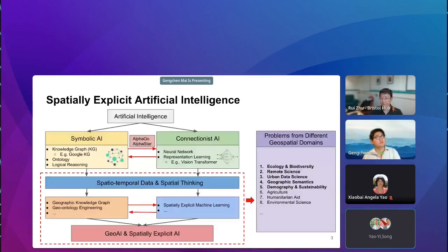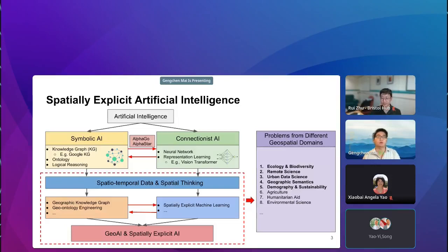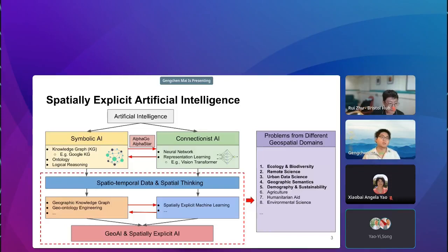Generally speaking, artificial intelligence has two branches: symbolic AI and connectionist AI. In symbolic AI, we have knowledge graphs and logical reasoning. In connectionist AI, we have neural networks and representation learning. When we conduct spatial AI predictions on spatial and temporal data, we can think about how to incorporate spatial thinking and spatial principles into model design or ontology design. For symbolic AI, we have geographic knowledge graphs. For connectionist AI, we have spatially explicit machine learning, which can be used across various domains such as ecology, remote sensing, and urban data science.